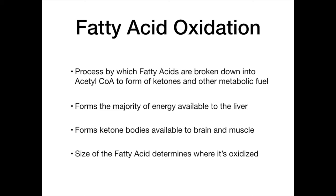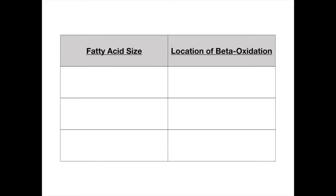Beta-oxidation forms ketone bodies in the liver, which are available to the brain and muscle. The size of the fatty acid being broken down determines where it is oxidized — this is a very high-yield discussion. The size of the fatty acid determines where it's broken down and where beta-oxidation occurs.